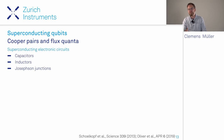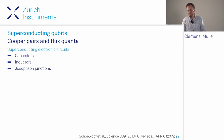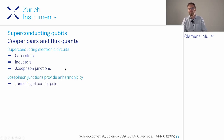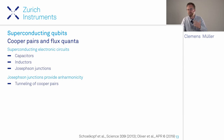Superconducting qubits are essentially superconducting electronic circuits. Basic circuits built from capacitors and inductors form a harmonic oscillator with equidistant energy levels—not suitable as a qubit. However, Josephson junctions provide a source of anharmonicity to the circuit, so adding Josephson junctions to a superconducting electronic circuit allows us to use the resulting structure as a qubit.